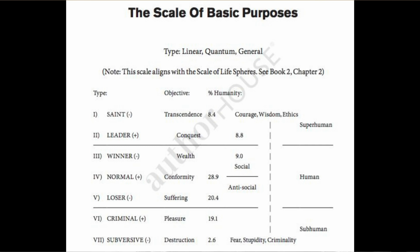Going up into the superhuman band, you reach the great leaders — people like Winston Churchill, Abraham Lincoln, and Alexander the Great, whose basic purpose is to conquer. Lincoln was determined to conquer the Confederacy; Churchill was determined to conquer the Nazis. The leader is down for the struggle — not doing this for selfish reasons. There is something that needs to be conquered, and he's going to conquer it.